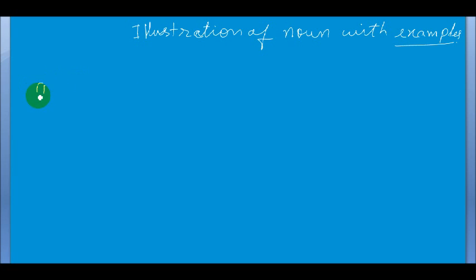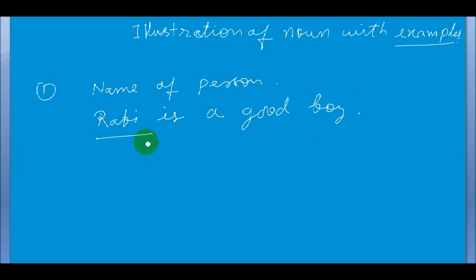First example is name of person. Rabi is a good boy. Here Rabi is the name of the person.